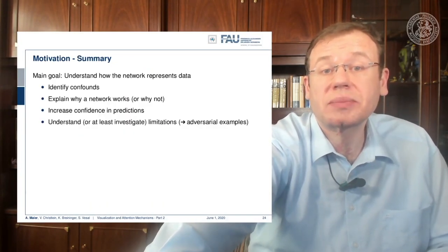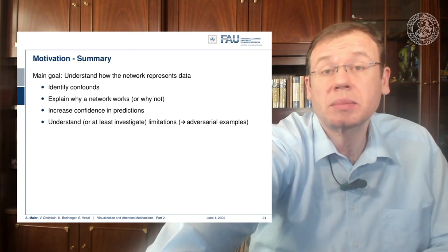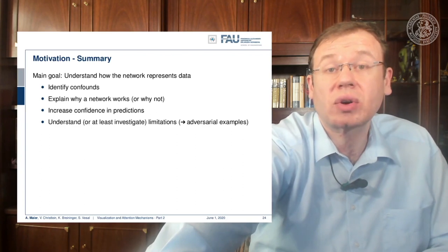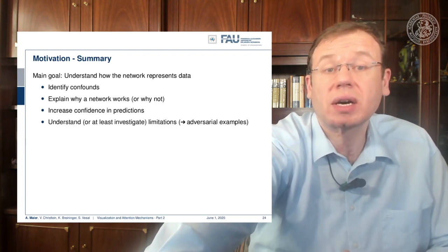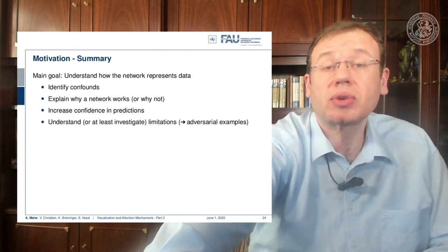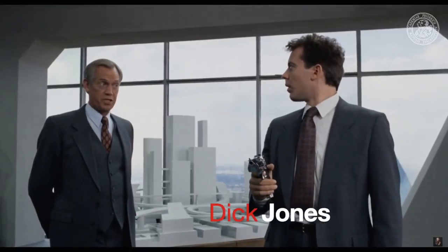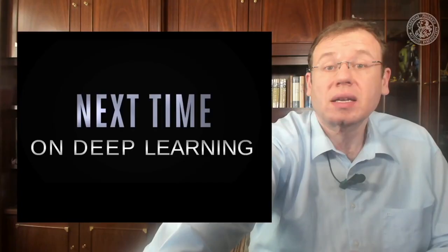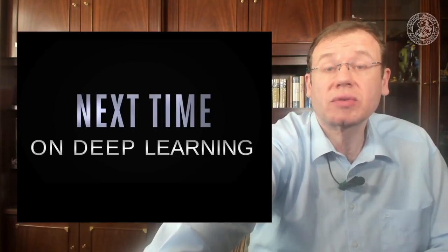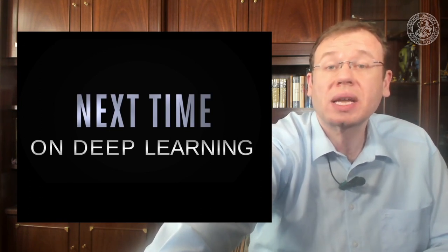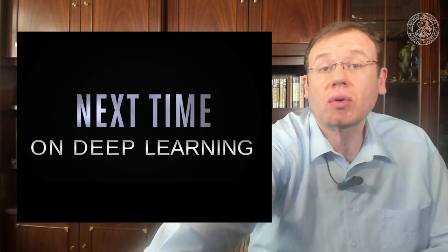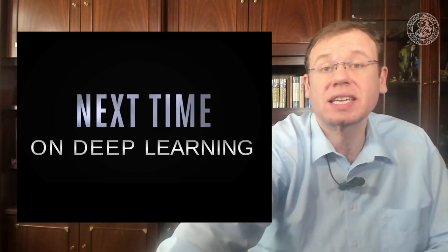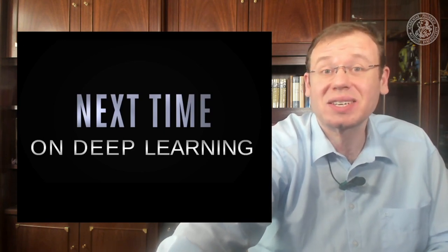So this is the summary of the motivation. We see that sometimes there are strange things happening in deep neural networks, and we would like to understand why they occur and what the problem is. This can be done by visualization techniques — you want to identify confounders, explain why a network works or doesn't, and increase the confidence in predictions. Next time we will look into different visualization techniques, starting with the simpler ones, followed by optimization-based and gradient-based techniques, but we will only look into activation-based techniques in the next video. Thank you very much for listening and see you in the next video.